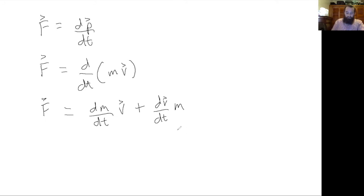So now this last term will look familiar. The derivative of velocity with respect to time is acceleration. But now this term might look different. In most of introductory physics, we just assume that the mass of something isn't changing with respect to time.